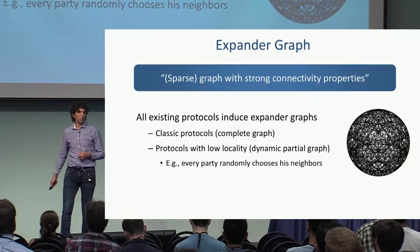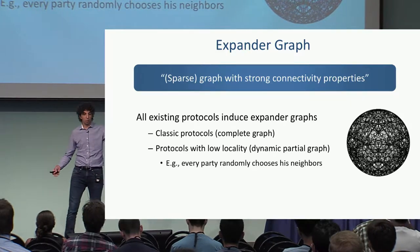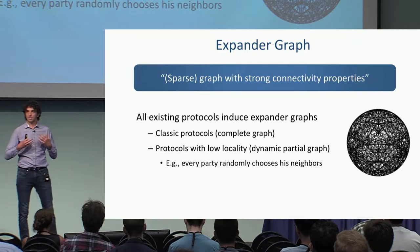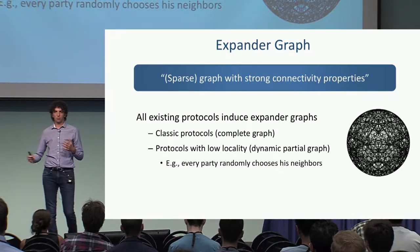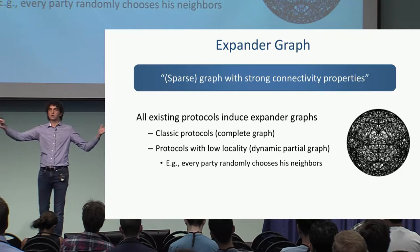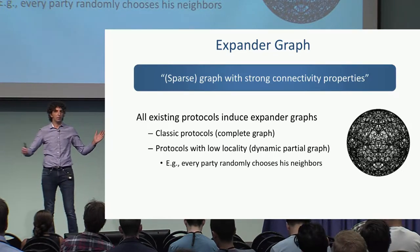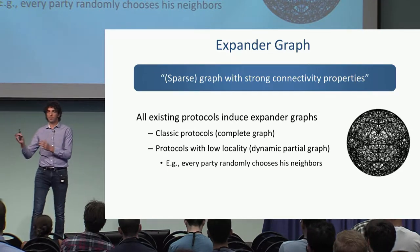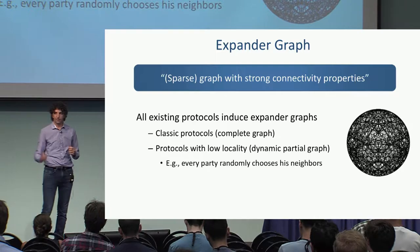Going back to the classic protocols, the communication graph is a complete graph. If you look at the more recent protocols with sublinear locality, they induce an expander in a very strong way. For example, if every party randomly chooses who its set of neighbors is going to be — which other parties it will send messages to and listen to — we'll get an expander.